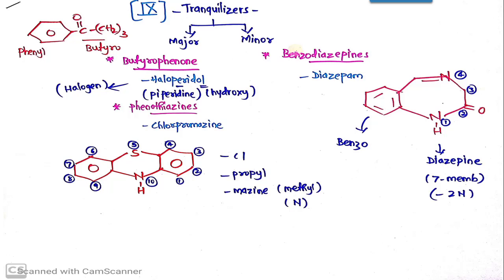First is butyrophenone, an example of which is haloperidol, which is a very famous example also known as Haldol. Phenothiazine is the second class which is today's class. The example which belongs to Phenothiazine is Chlorpromazine.